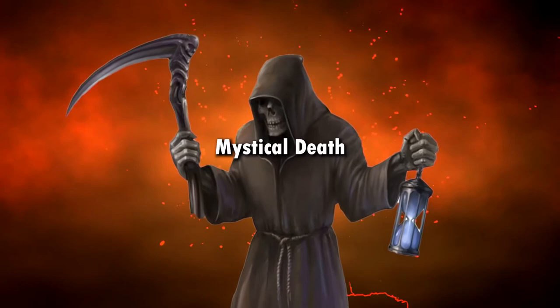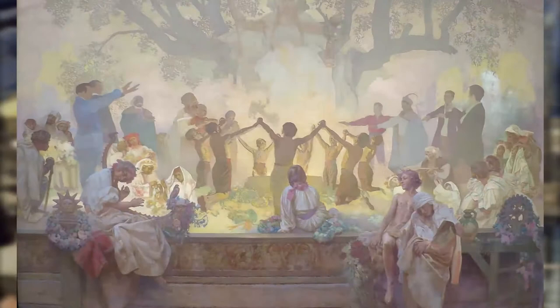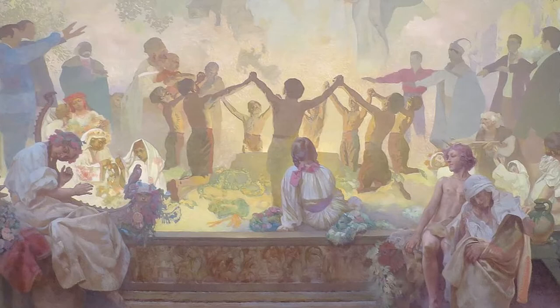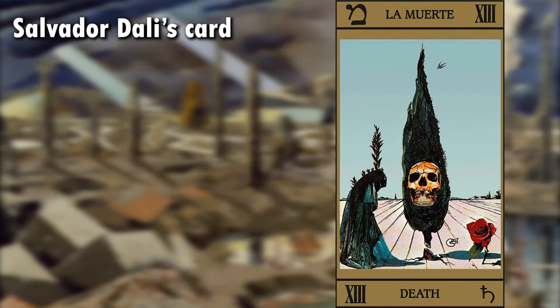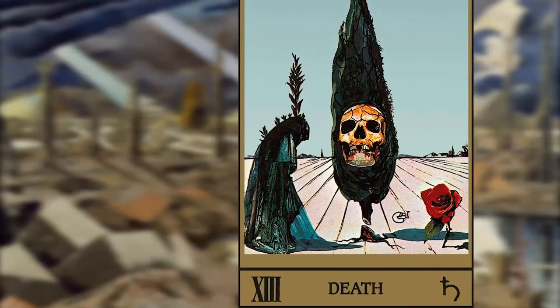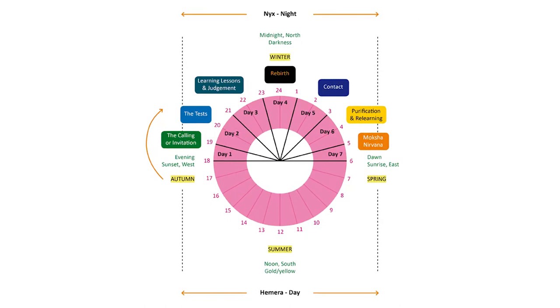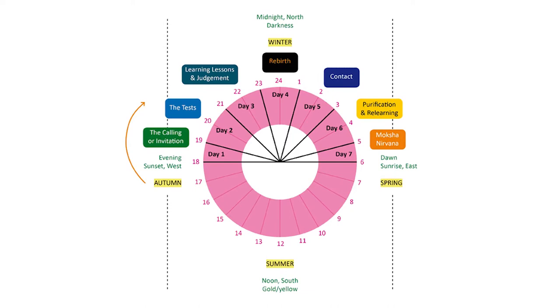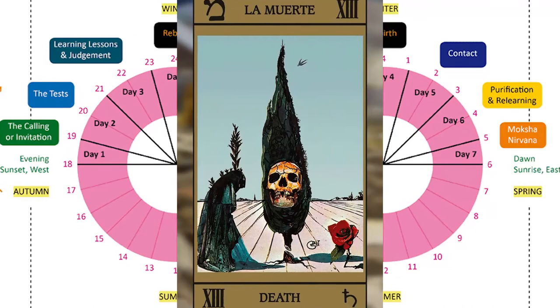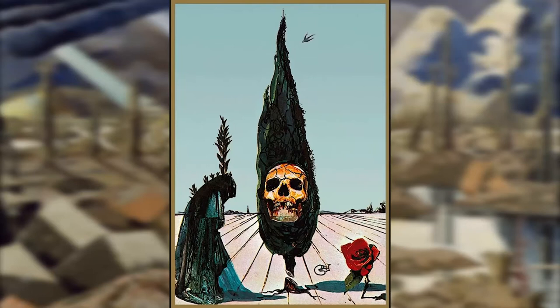Mystical Death. We have selected four tarot cards that illustrate mystical death, each in a unique way. Salvador Dali's card has a skeleton symbolising death, but all is not as it seems. A red rose is very prominent — red is symbolic of the last stages of the spiritual path, when the self dies in annihilation and is absorbed into the higher spirit. Dali's skull is also in a cedar or cypress tree, and the cedar is a symbol of immortality.